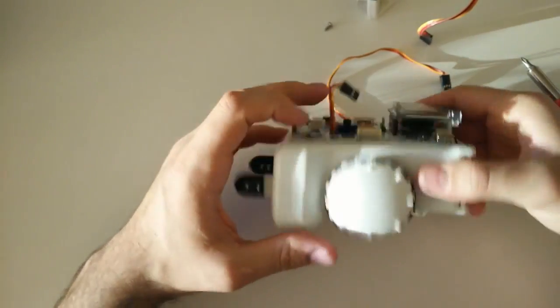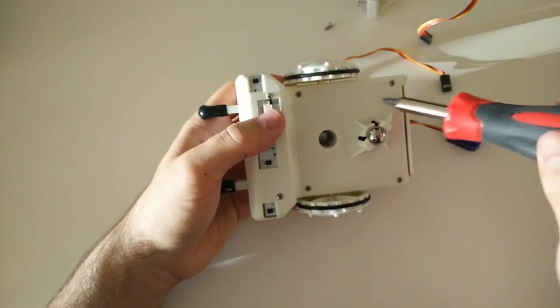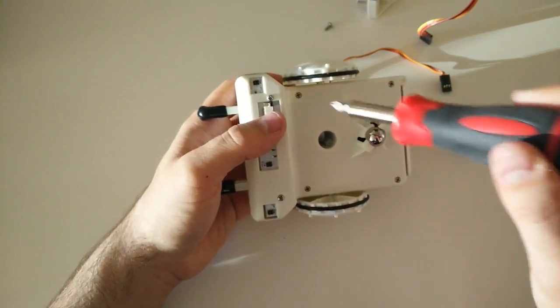We still have to get it apart though, so let's turn it over so we can get to the screws underneath. There are four screws that you're going to want to remove. You don't want to remove the two in the front.